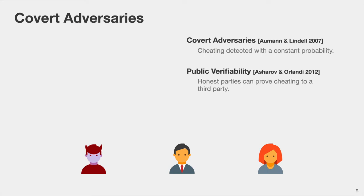In 2012, Asharov and Orlandi observed that we would actually like something a little bit stronger — that the protocol is publicly verifiable. This means that if the honest parties detect cheating, they should obtain some publicly verifiable certificate they can show to an outside observer to convince that observer that the adversary did indeed cheat. The motivation was to disincentivize the adversary from cheating by potentially incurring a financial penalty if cheating is detected.